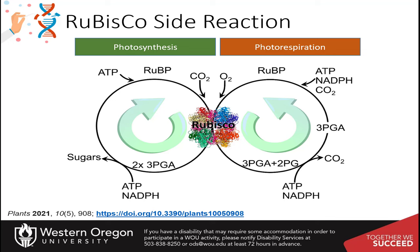We'll see some other plant types that have adaptations to conserve carbon dioxide and sequester oxygen away from the Rubisco enzyme. You want to definitely keep pores open while doing photosynthesis so that the oxygen byproduct produced in the light reactions can be expelled into the atmosphere, not held in the cell where it can interact with the Rubisco enzyme.